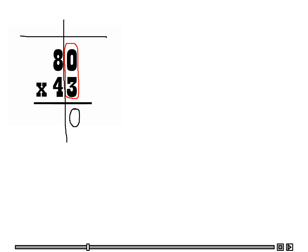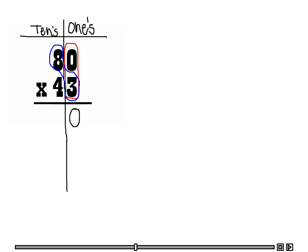I am going to divide this in half so you can see the place values — we know this is the ones, and the next place value is the tens. Now we are going to move over to the tens place, so we need to multiply 3 times 8, and 3 times 8 is 24.